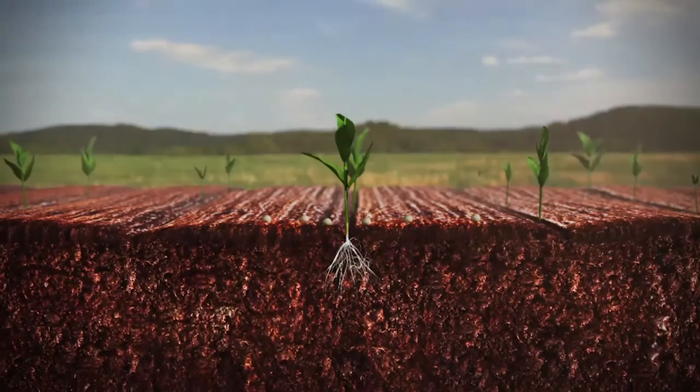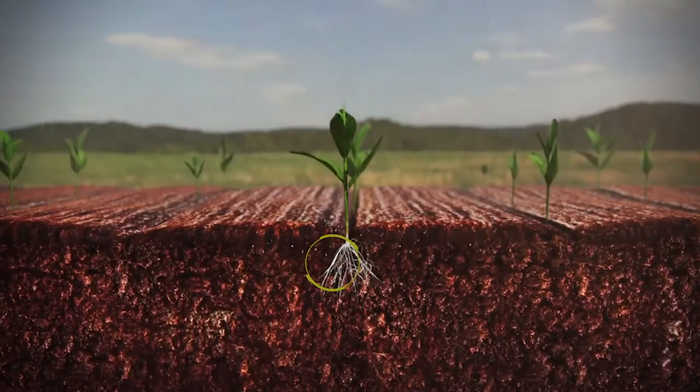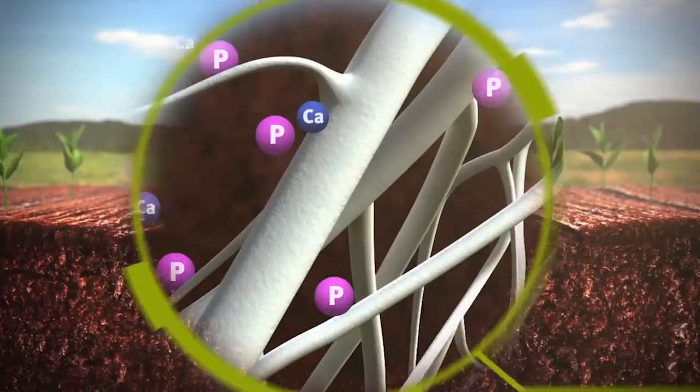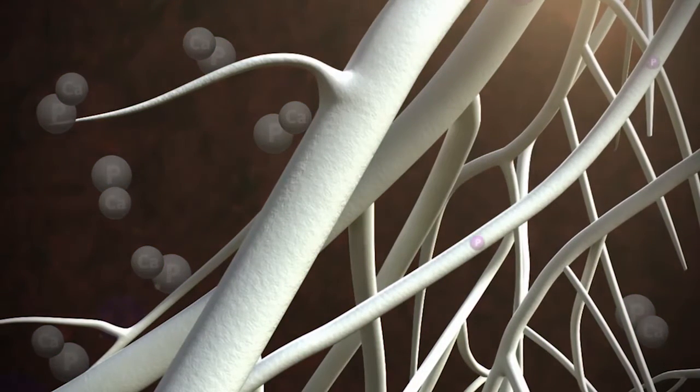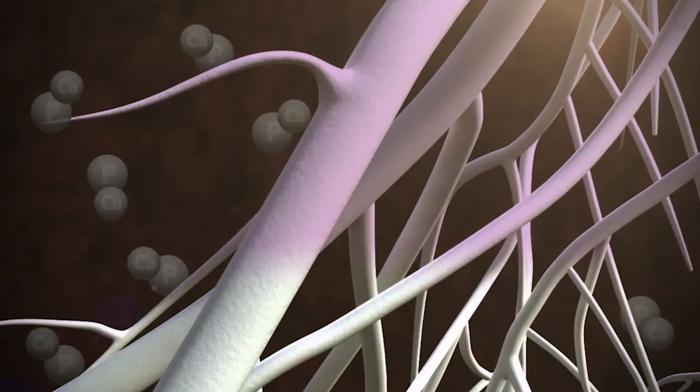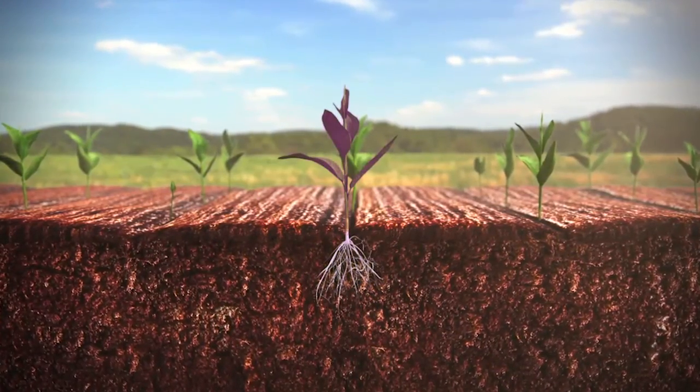On the contrary, in calcareous soils, we have another mechanism because we have the presence of calcium and the pH that is quite alkaline. And in these conditions, we have the reaction between phosphate and calcium, forming calcium phosphate that are not soluble and are not available for plants.